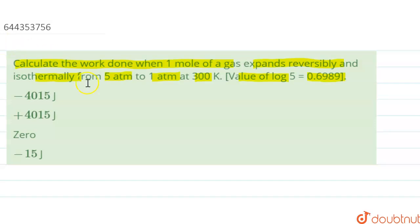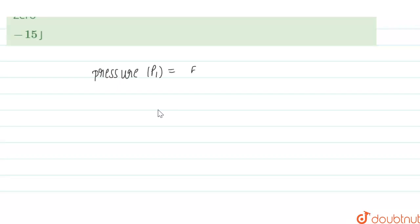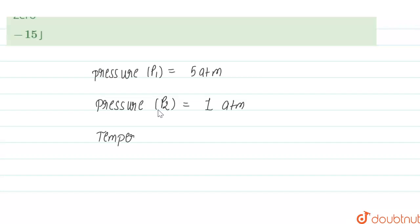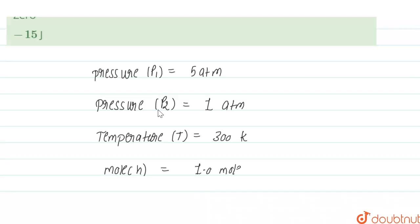The given data is: pressure P1 is given as 5 atm, pressure P2 is given as 1 atm, temperature T is given as 300 Kelvin, and the number of moles n is given as 1 mole. We have to calculate the work done.